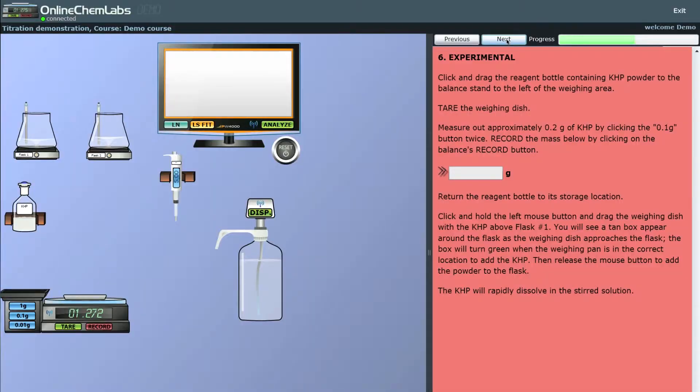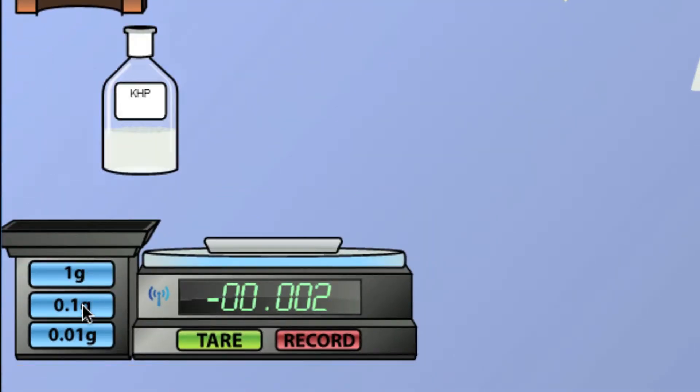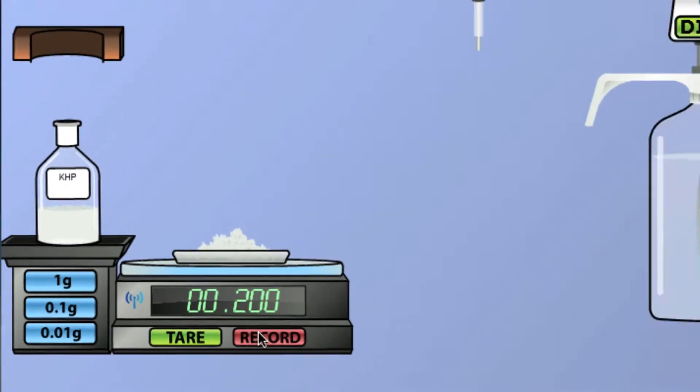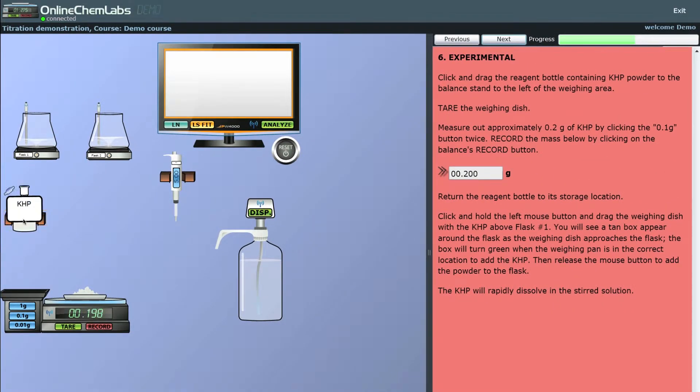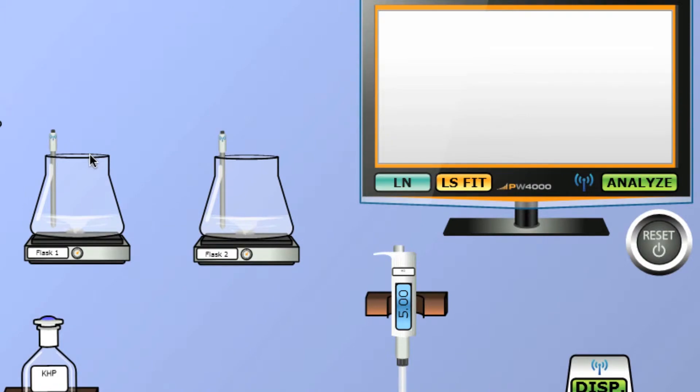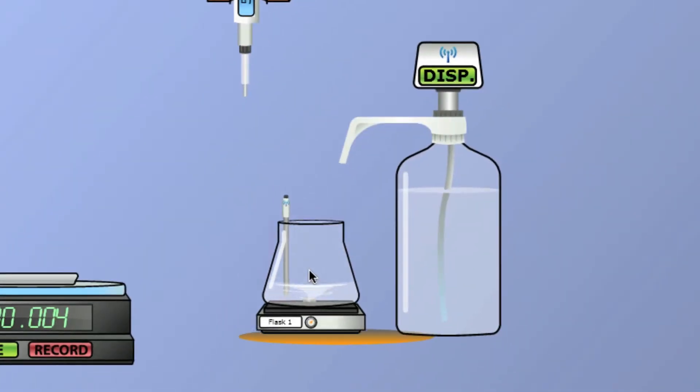We use Online Chem Labs, which is at onlinechemlabs.com, and it's a virtual laboratory package. There are instruments available to the students that otherwise in a freshman experience on a brick-and-mortar level wouldn't happen, and that's because we're not limited by cost or by availability of instruments, but the same student learning outcomes are met.